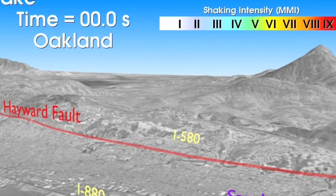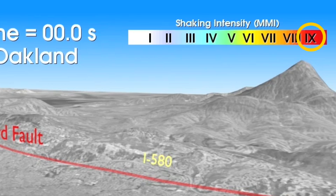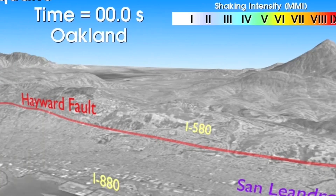The color scale at the top right corner indicates the intensity of the shaking. For example, an intensity of 5 would generate strong shaking and be strongly felt by people but have minimal impact on structures. An intensity of 9 would create truly intense ground motions that could affect and damage engineered structures.